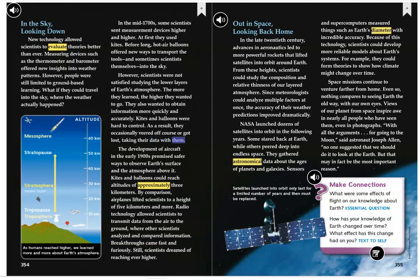The development of aircraft in the early 1900s promised safer ways to observe Earth's surface and the atmosphere above it. Kites and balloons could reach altitudes of approximately 3 kilometers. By comparison, airplanes lifted scientists to a height of 5 kilometers and more. Radio technology allowed scientists to transmit data from the air to the ground, where other scientists analyzed and compared information. Breakthroughs came fast and furiously. Still, scientists dreamed of reaching ever higher.